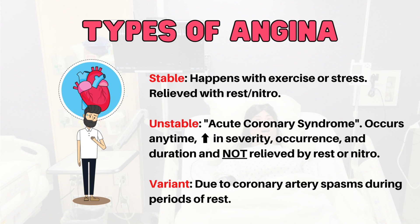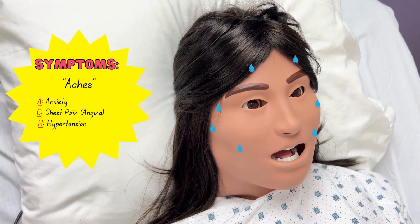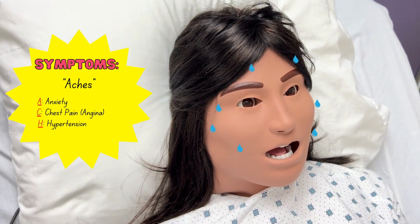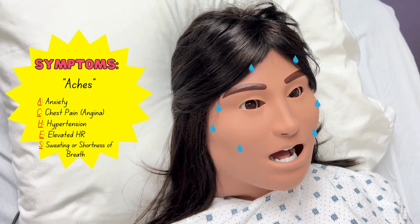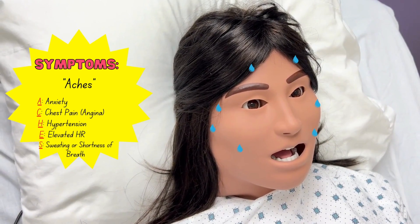Unstable angina can occur anytime, it also increases in severity, occurrences, and duration, and it's not usually relieved by rest or nitroglycerin. And then finally, variant angina is due to coronary artery spasms during periods of rest. Back to symptoms: H for hypertension — so high blood pressure — E for elevated heart rate, and S for sweating or shortness of breath.